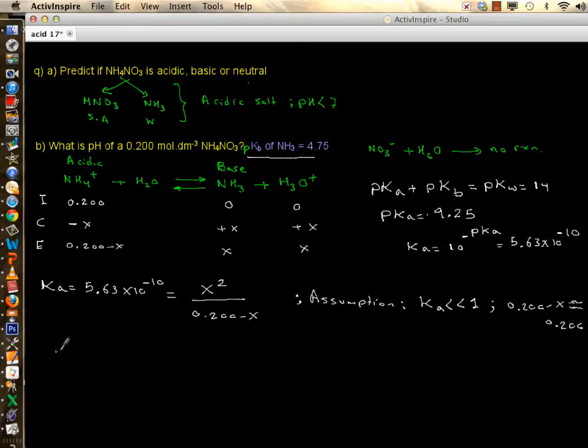So x, which is concentration of hydrogen or hydronium, is simply equal to the square root of 0.2 times 5.63 times 10 to minus 10.